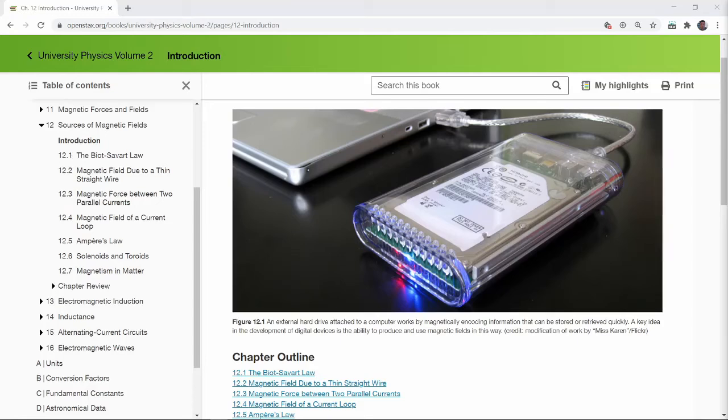Hi, this is the overview video for Chapter 12, Sources of Magnetic Fields. This is a long chapter that covers quite a few difficult topics. So I want you to make sure that you slow down, take enough time in this chapter, read through the sections, and make use of the lecture resources that are available.